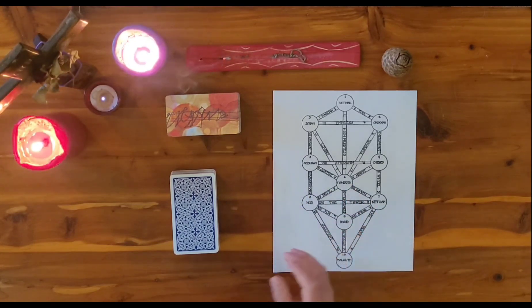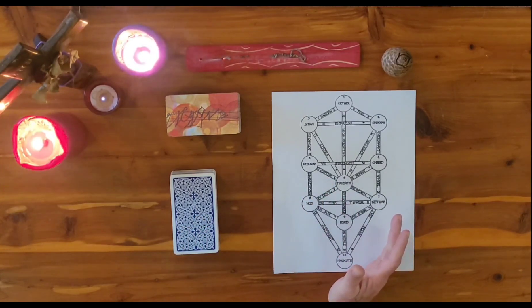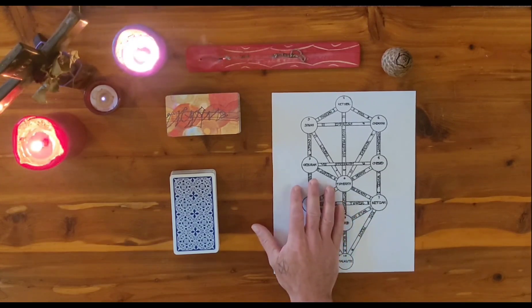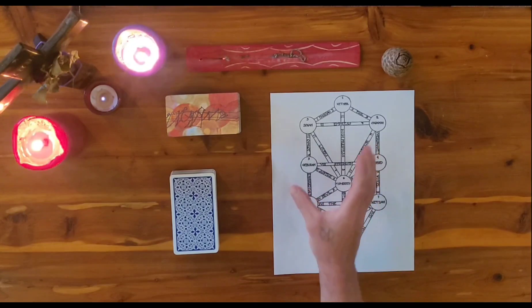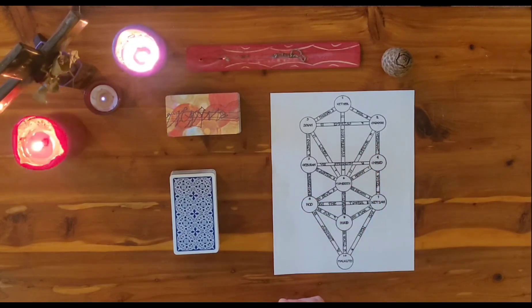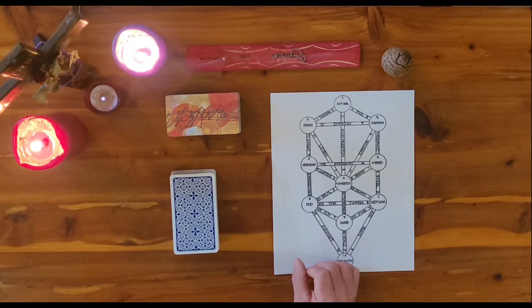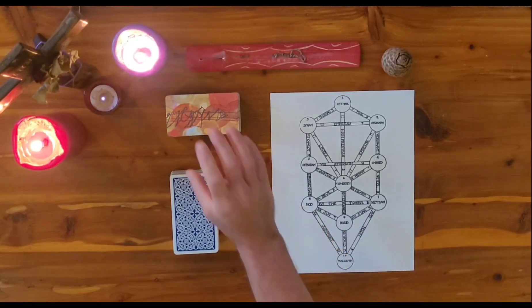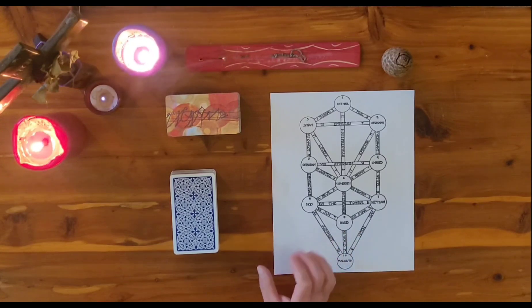So in drawing a major arcana card, it will represent the path that you're on. And this will depict where you're at in your spiritual journey on the tree of life. And then the minor arcana, together with the path being revealed, will tell the story. And then we'll draw from the Osho cards for clarification.